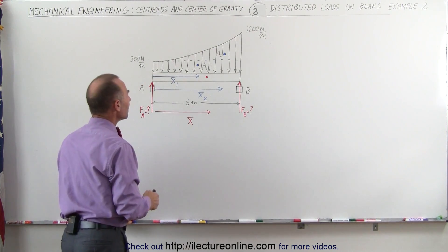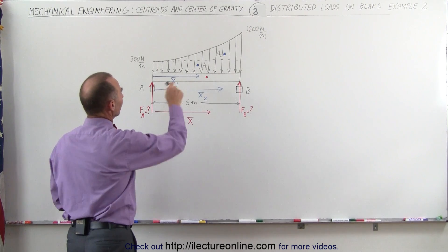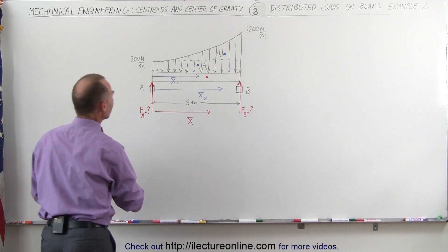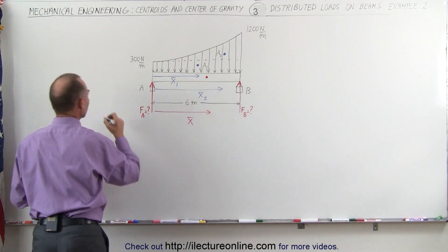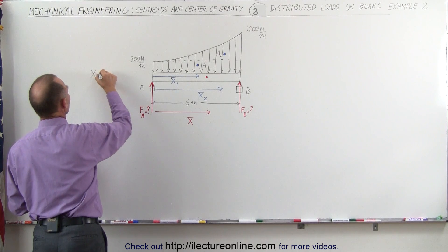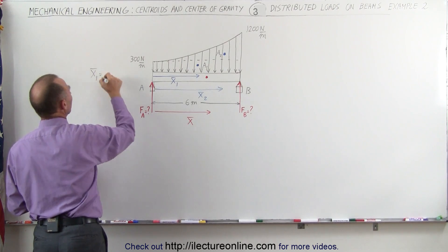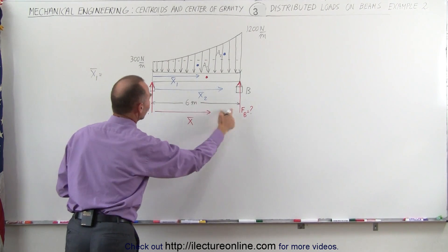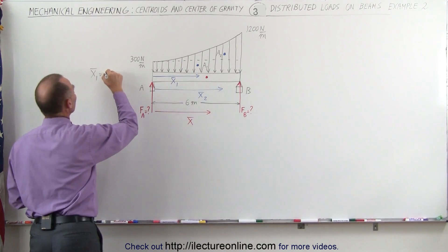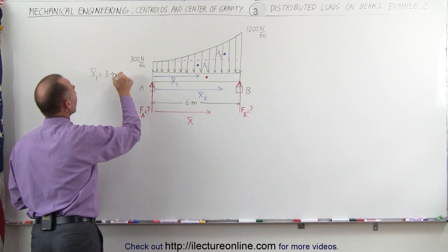To find the centroid of the first load, that's relatively easy — it must be right halfway between. Therefore x sub 1 must be equal to half the distance from 0 to 6 meters, which is 3 meters.